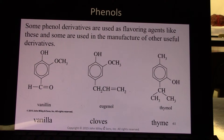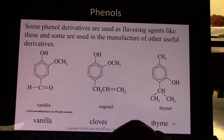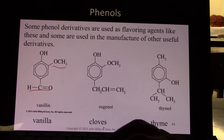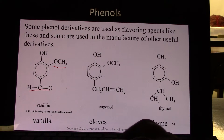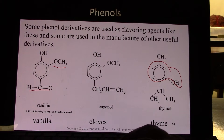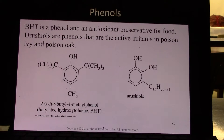Some phenol derivatives are used as flavoring agents. Vanillin is based off of a phenol — we have a methoxy group on carbon 2 and an aldehyde on carbon 4. Cloves contain eugenol, which has a methoxy group and an allyl group. Thymol is used for thyme, with an isopropyl group on carbon 2 and a methyl group on carbon 4. A lot of flavors come from these phenols.